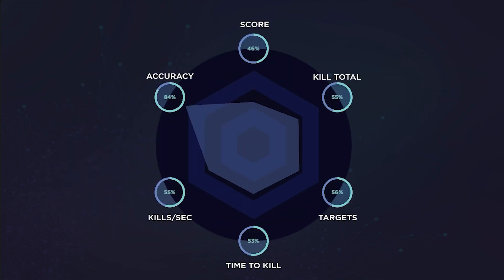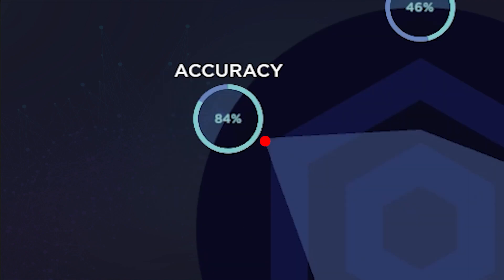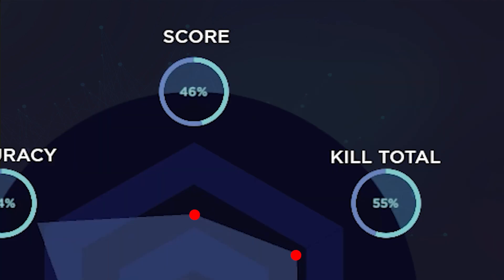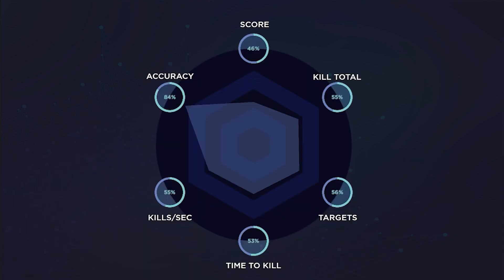At a glance, you can also interpret your strengths for the task from the white indicator. The closer the point is to the attribute, the better you did in that area. Breaking down this chart, you can see that the accuracy was high but the score and kill total were low, meaning that the task was performed slower than optimal.